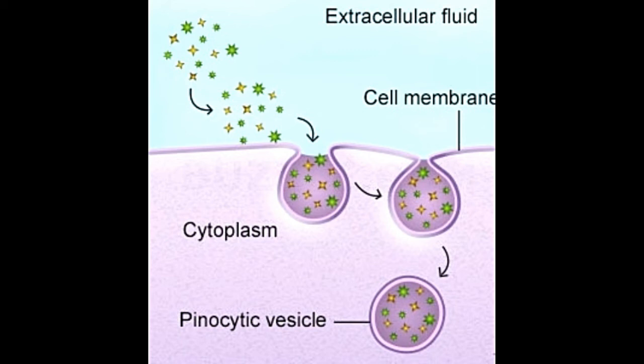Type of endosome — In phagocytosis, molecules are engulfed to form vesicles called phagosomes, which are larger than 0.75 µm in diameter. The vesicles formed by pinocytosis are called pinocytic vesicles or pinosomes and are much smaller in size, about 0.5–5 µm in diameter.